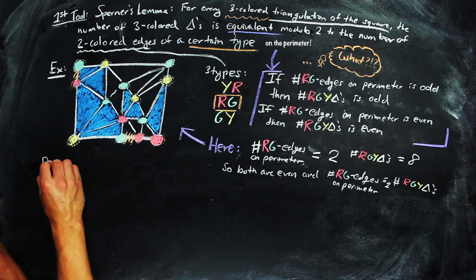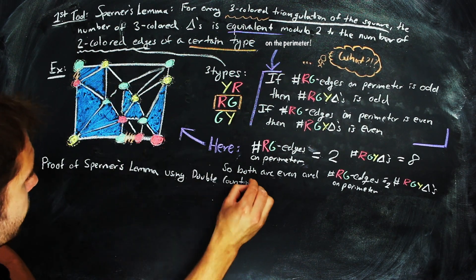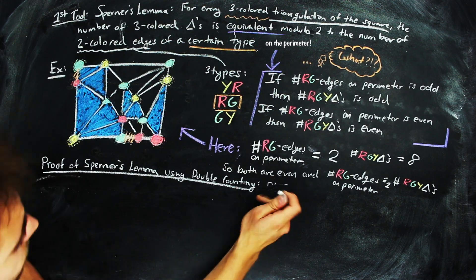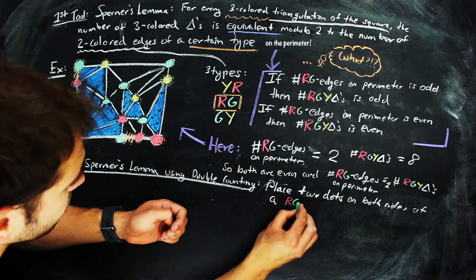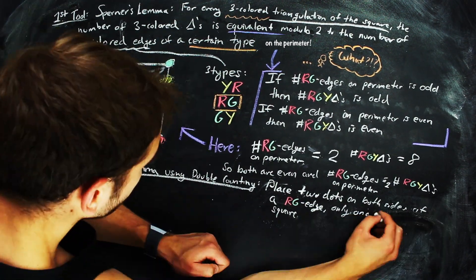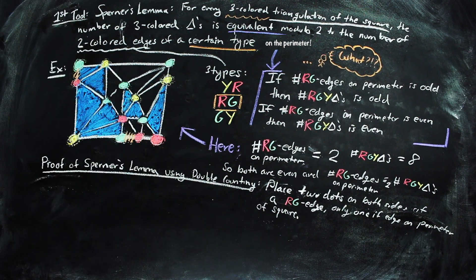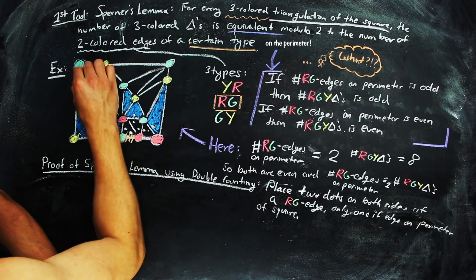So, how do you exactly prove it? Well, we're going to use some combinatorics. On each side of a red-green edge, put a dot. If the red-green edge is on the perimeter, only put one dot, because we only care about dots being on the interior of the square.